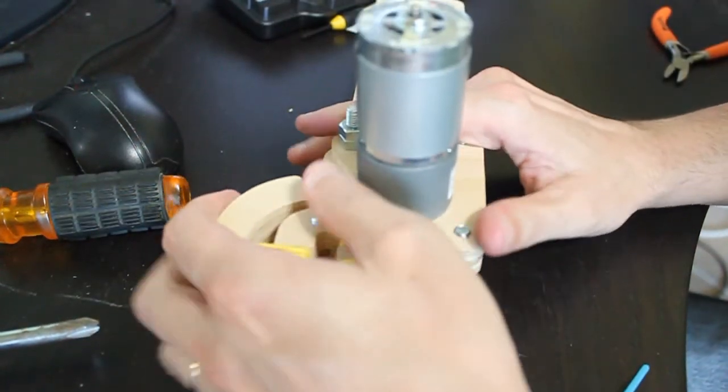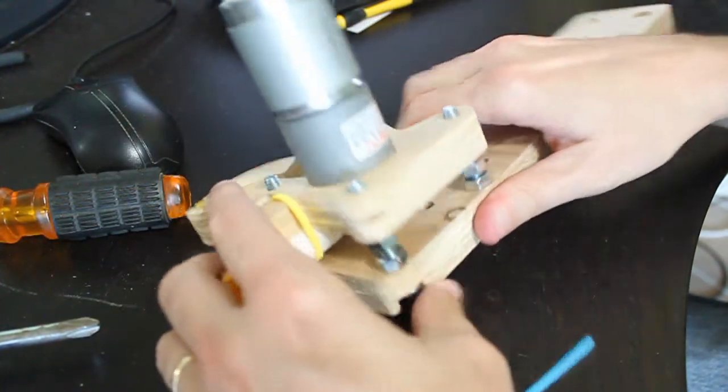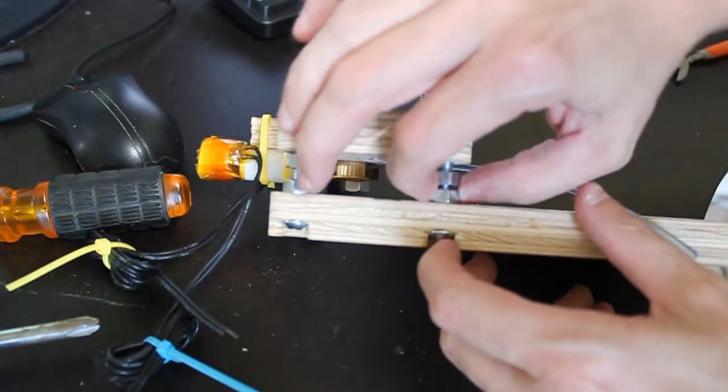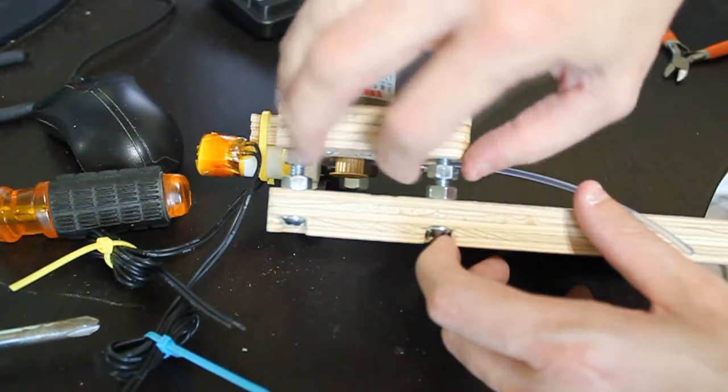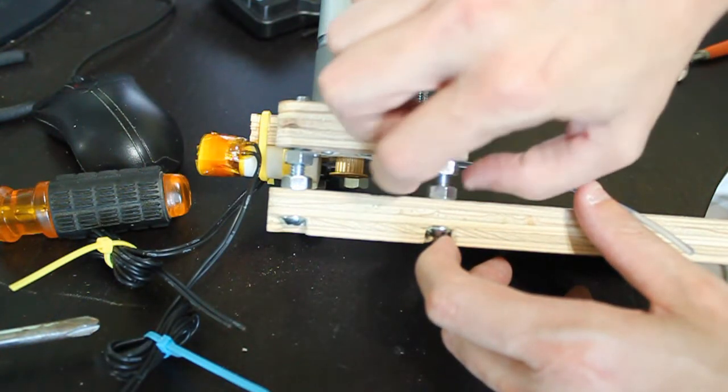Slide the extruder onto the three screws. This may be tough at first, but you can loosen the nut to make the screws fit into the holes easier.